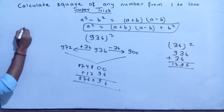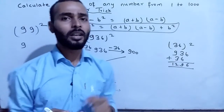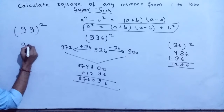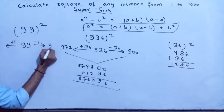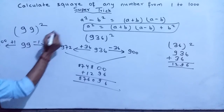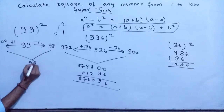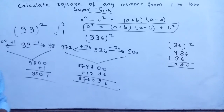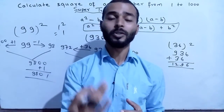Now let's calculate the square of 99. The nearest number with a zero to 99 is 100. To make 100, add 1, so b equals 1. Then: (99 + 1) = 100 and (99 − 1) = 98. The square of 1 is 1. Multiply 98 by 100 to get 9800, then add 1. So the square of 99 is 9801. You can try this yourself. If you practice, you can easily calculate the square of any number from 1 to 1000.